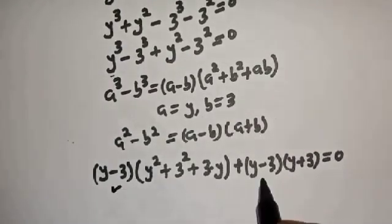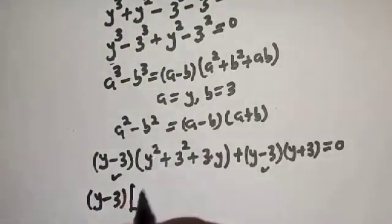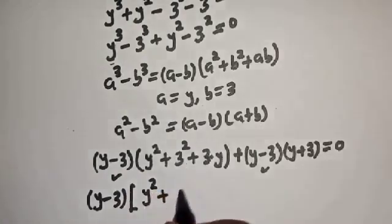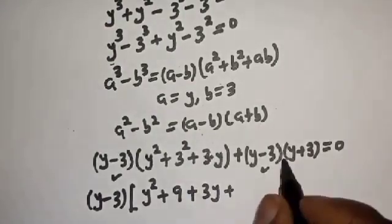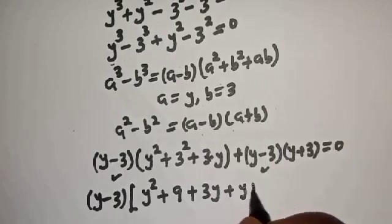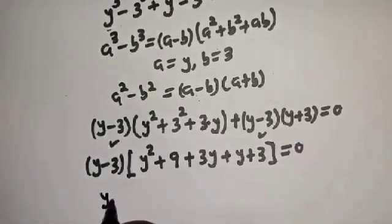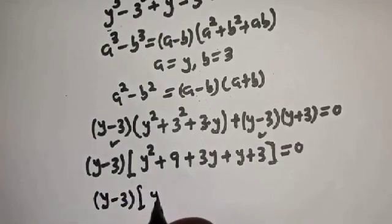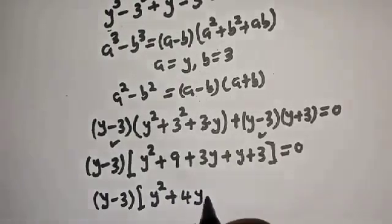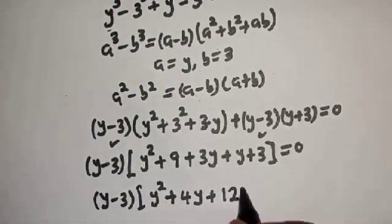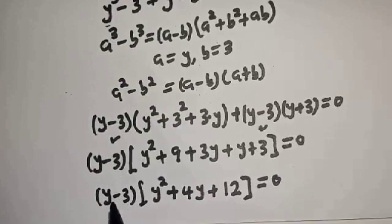Since (y − 3) is common, we factor it out: (y − 3) times [(y² + 3y + 9) + (y + 3)] equals zero. Combining terms inside: y² + 3y + y + 9 + 3 gives y² + 4y + 12, so (y − 3)(y² + 4y + 12) = 0.